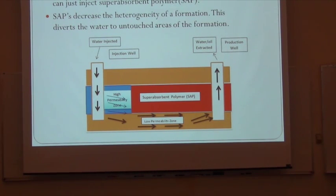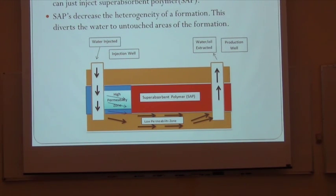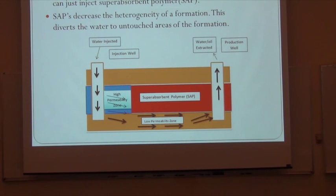That is the main reason we are trying to figure out how this superabsorbent polymer is going to react with various brine concentrations, because you are not going to find the same well with the same temperature, the same salinity — it is going to be different. So we are trying to figure out which polymer is the best. I am working on a different polymer, but you can figure out how that polymer is going to work with salinity, temperature, and pH number.